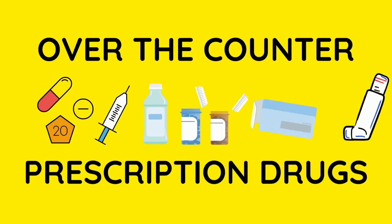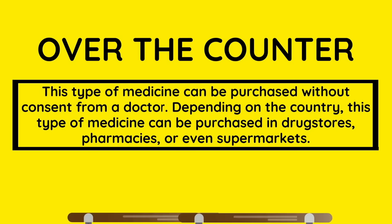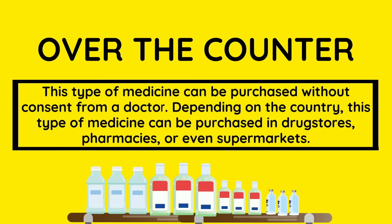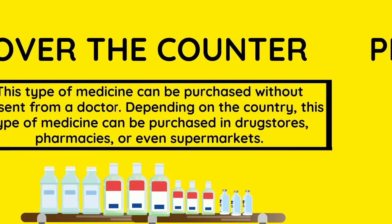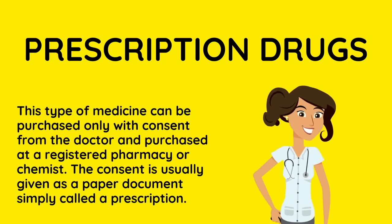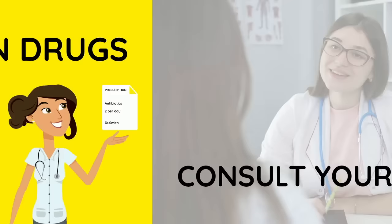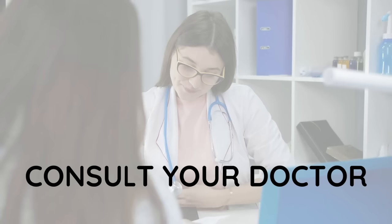Let's take a look at the difference between over-the-counter and prescription drugs. Medicine which is over-the-counter can be purchased without consent from a doctor. Depending on the country, this type of medicine can be purchased in drugstores, pharmacies, or even supermarkets. Whereas with prescription drugs, this type of medicine can only be purchased with consent from the doctor at a registered pharmacy or chemist. The consent is usually given as a paper document simply called a prescription. If you're worried about any of the symptoms we discussed, make sure to talk to your local doctor.